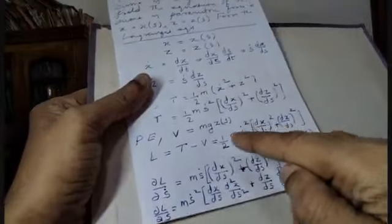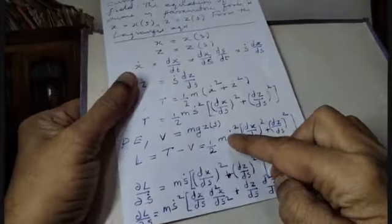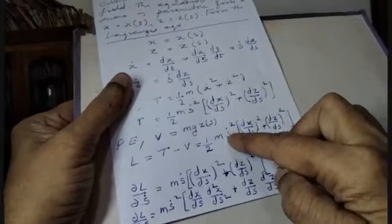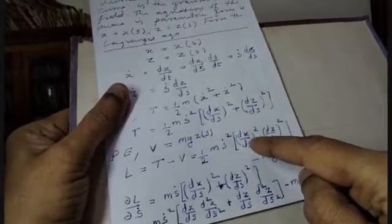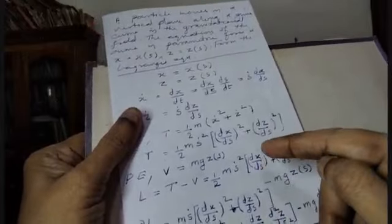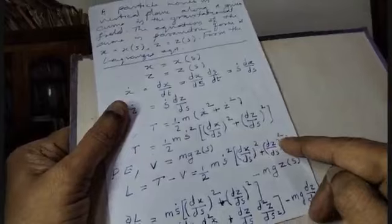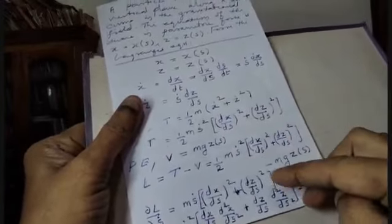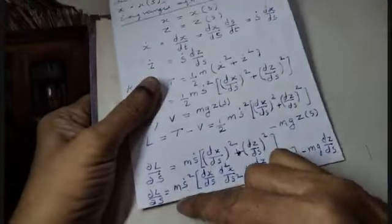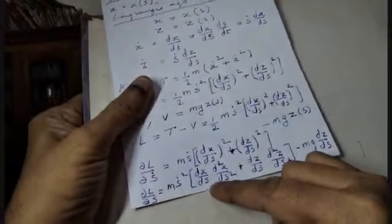Computing ∂L/∂s: treating ṡ as constant, we differentiate to get one-half m ṡ² times [2(dx/ds)(d²x/ds²) + 2(dz/ds)(d²z/ds²)], minus mg times dz/ds. After cancelling factors of 2, this gives ∂L/∂s equals mṡ²[(dx/ds)(d²x/ds²) + (dz/ds)(d²z/ds²)] minus mg(dz/ds).